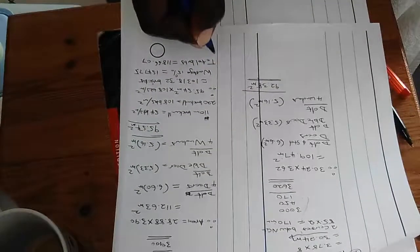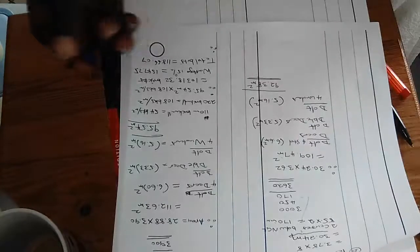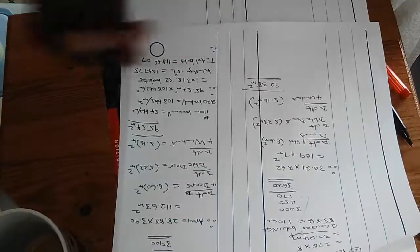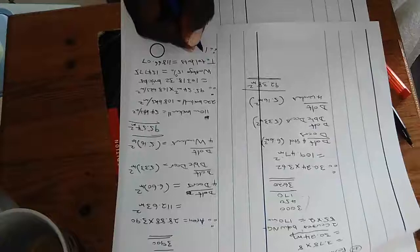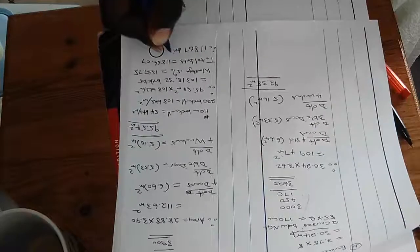You'll get 11,866.07 bricks that you need to order. So since we do not have a 0.7 in the store where you can buy a 0.7 brick, we say 11,867 bricks to order.